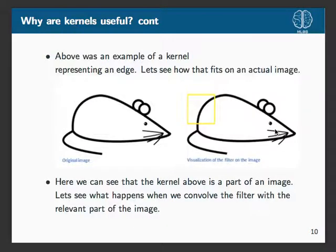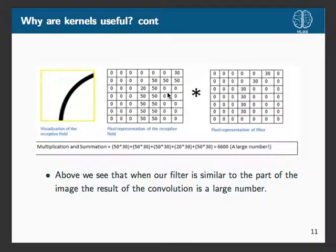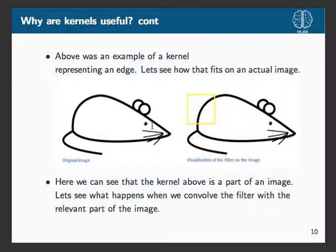Another example: a curve can be represented by a kernel where non-zero values correspond to that curve and zero values don't. We can visualize this with an image of a mouse — that same curve appears there. When we convolve the filter with the matching region of the image, we get 6600, a large number. But if we convolve it with a non-matching region like the head, we get a much smaller number because it doesn't match. Can you see why convolutions are useful compared to just stacking all features together?